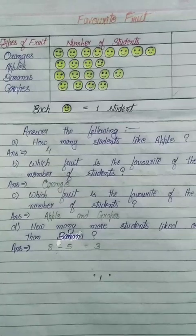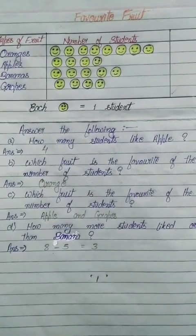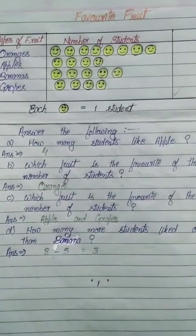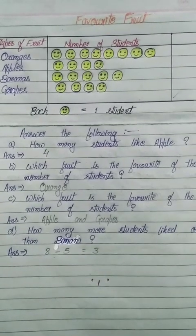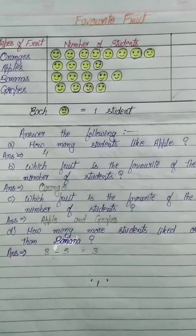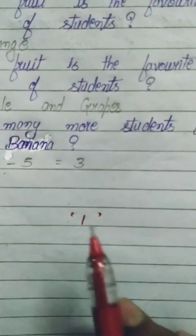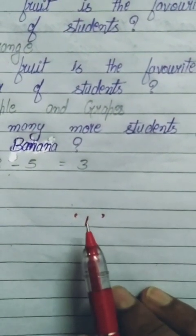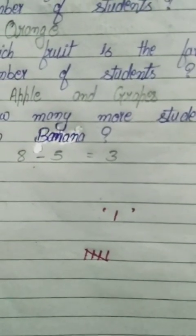Have you wondered how earlier civilizations learned to count? The first method of counting was counting on fingers. Researchers and archaeologists show that early civilizations used tally marks to remember their counting. Each mark represents one data point, and a bundle of five is made by crossing it.